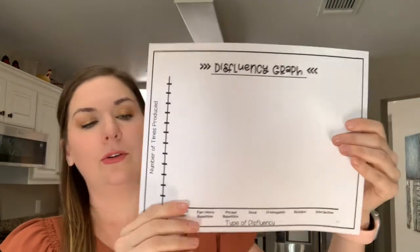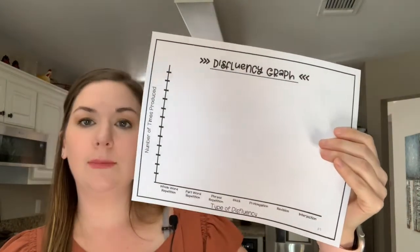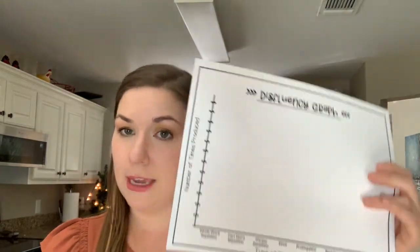Activity number three is having your students graph their disfluencies — super simple and easy to do. I like it because it ties into math and graphing skills they're learning in the classroom. I make a little graph: the number of times it happened on one axis and the type of disfluency on the other. You do a conversation sample or have them count disfluency types throughout the session, then graph it at the end. It gives them a visual representation and knowledge they'll need when you move to strategies, since different strategies may be more helpful for certain disfluency types.